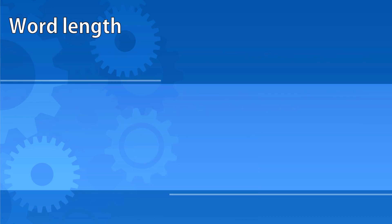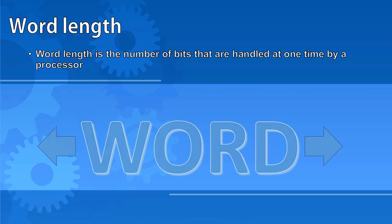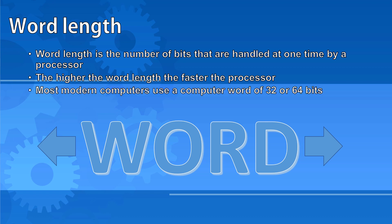The word length, or computer word, used in a processor is the number of bits that it handles in a given time. This could be an instruction or a piece of data. The higher the word length, the faster the processor. Most modern computers use a computer word of 32 or 64 bits.